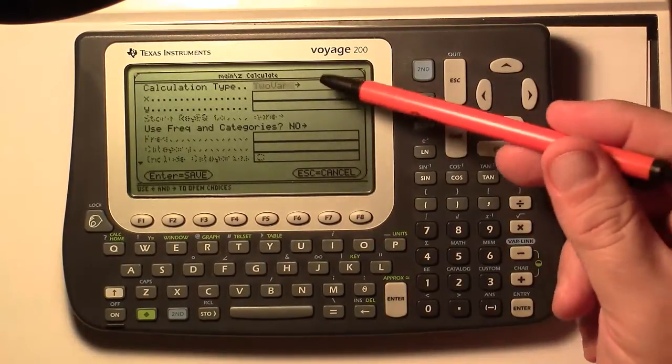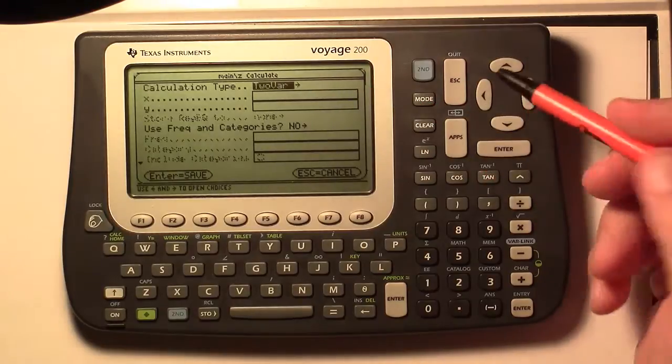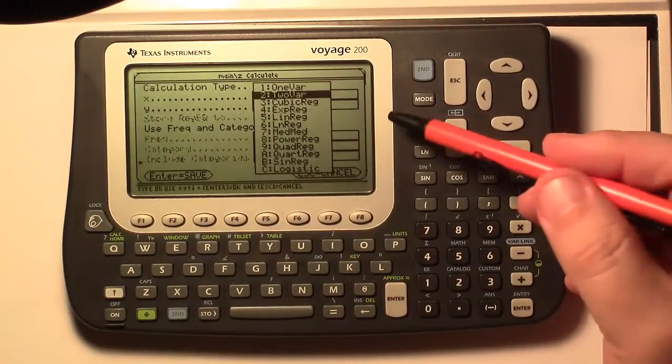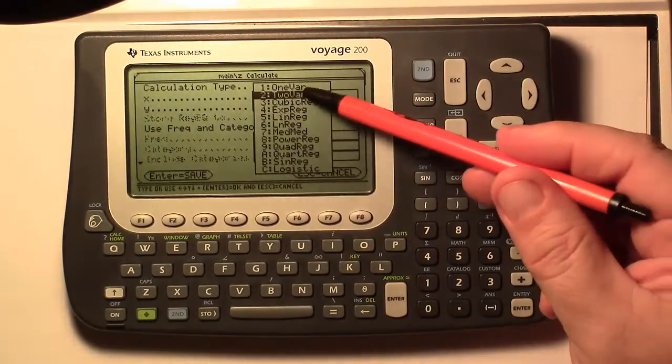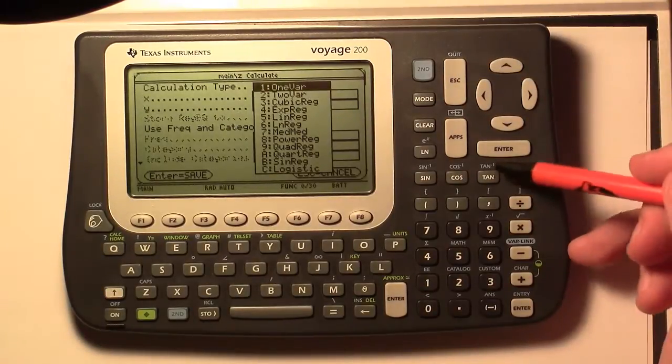Now it comes up and asks us for calculation type. And there's an arrow here. So we're going to right arrow. And then we want to choose one var. So I'm going to up arrow to one var and then press enter.